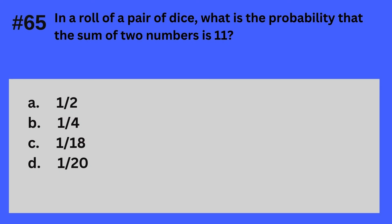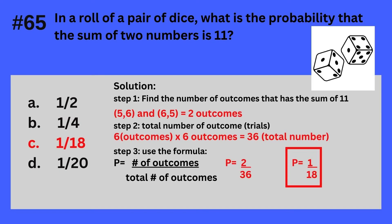Question 65. In a roll of a pair of dice, what is the probability that the sum of two numbers is 11? A. One half, B. One quarter, C. One eighteenth, D. One twentieth. The answer is C — one eighteenth. A die has six outcomes ranging from 1 to 6. Rolling two dice gives 36 total outcomes. The pairs that sum to 11 are (5,6) and (6,5) — that's 2 favorable outcomes. Probability equals 2 divided by 36, simplified to one eighteenth.